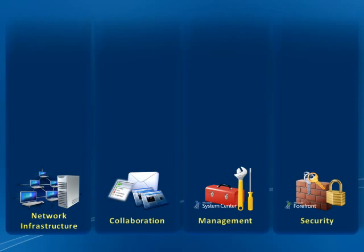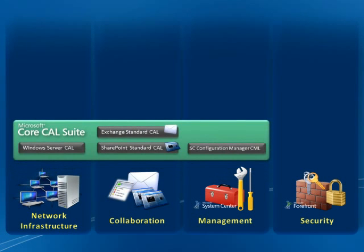Some of our CALs are available in CAL suites as well as being available stand-alone. We have two main CAL suites: the Core CAL suite and the Enterprise CAL suite. The Core CAL suite consists of the Windows Server CAL, the SharePoint and Exchange Standard CALs, and the System Center Configuration Manager Client Management License, providing a cost-effective way to purchase those CALs in one suite as opposed to stand-alone.